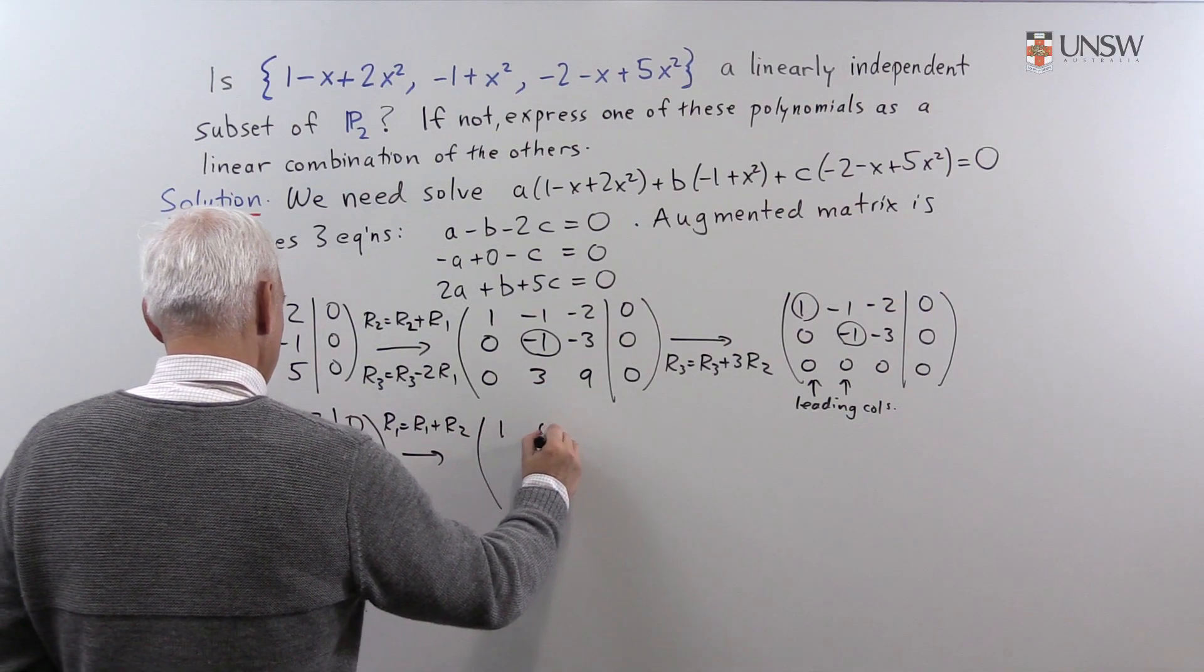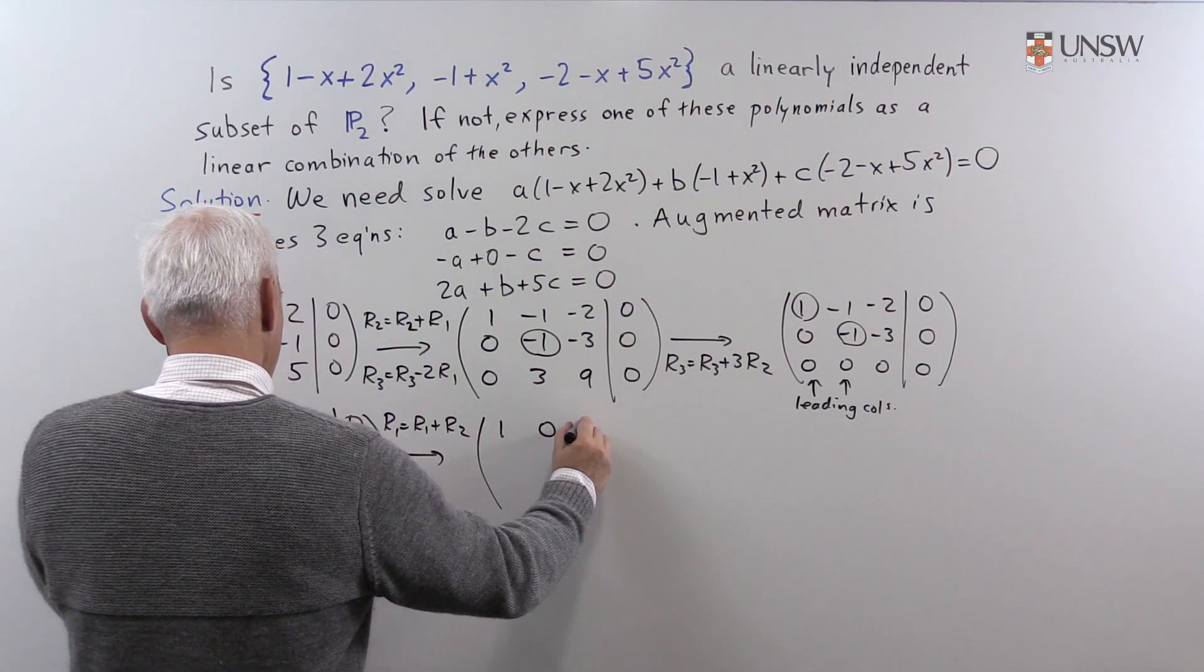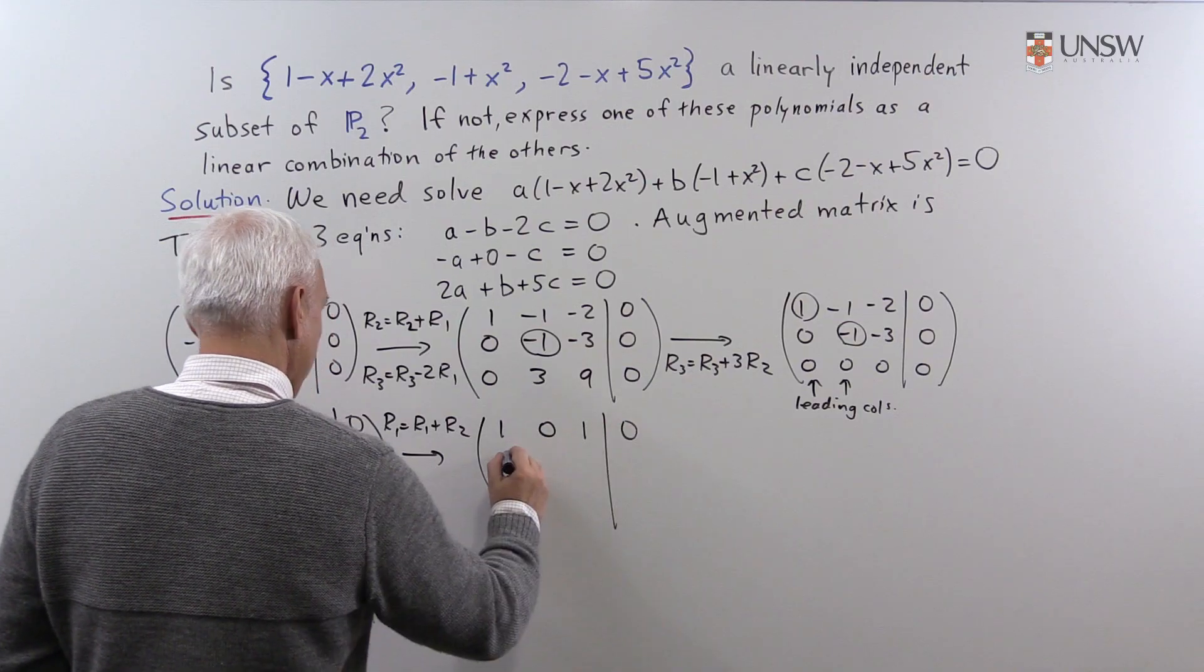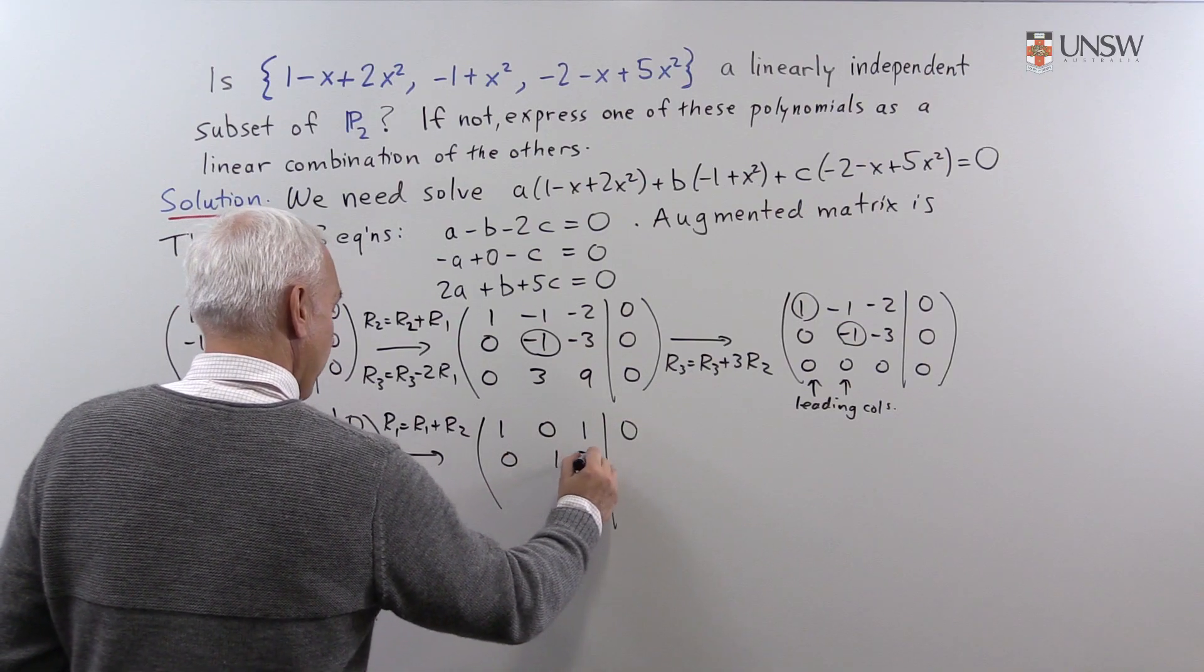So, we're going to take row 1 is row 1 plus row 2. We're going to add row 2 to row 1. That'll give us 1, 0, 1, 0, and 0, 1, 3, 0,